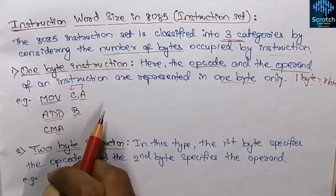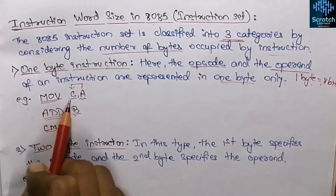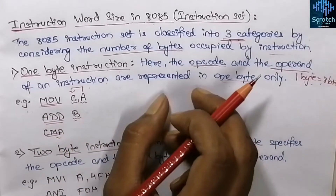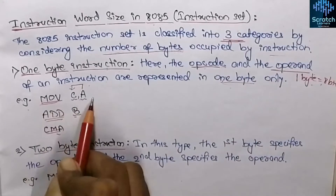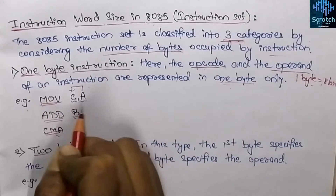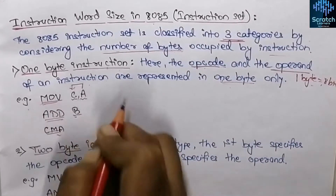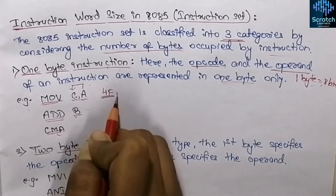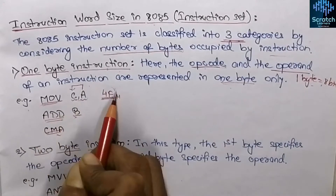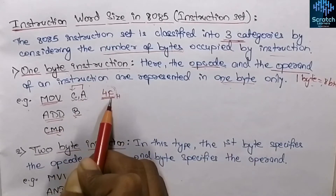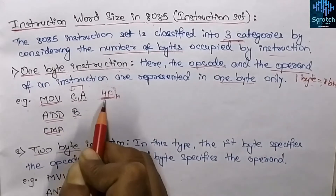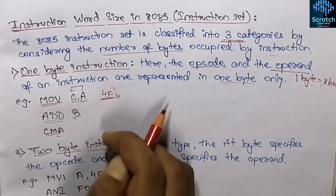In 8085, each instruction has a specific hex code. The processor cannot understand mnemonics like MOV C,A directly, so all instructions are given in hexadecimal. The hex code of MOV C,A instruction is 4F hex, and this 4F hex data is 8 bits — that is 1 byte. So while execution of MOV C,A we only need to specify this 8-bit hex code. MOV C,A is a 1-byte instruction. We don't need to remember these hex codes — they are provided by default.